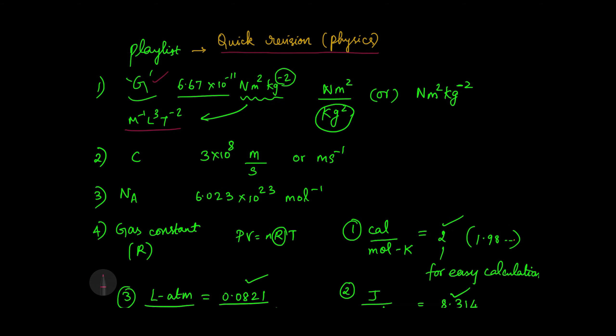Let's begin. Universal gravitational constant is represented by capital G. The value is 6.67 × 10 power minus 11 newton meter square per kg square. This is the correct way to write it — the numerator has meter squared and the denominator has kg squared.